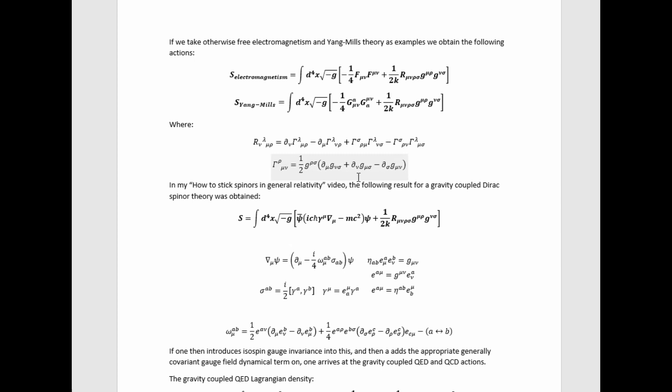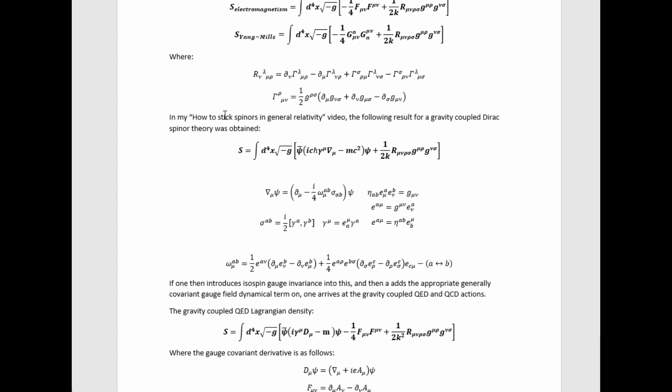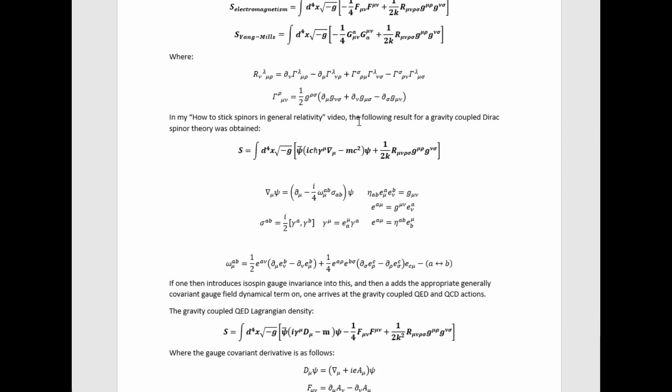and this formula for the Christoffel symbols in terms of the metric tensor. In my how to stick spinners in general relativity video, the following result for gravity coupled Dirac spinner theory was obtained, where the required covariant derivative of the spinner field is given by this,